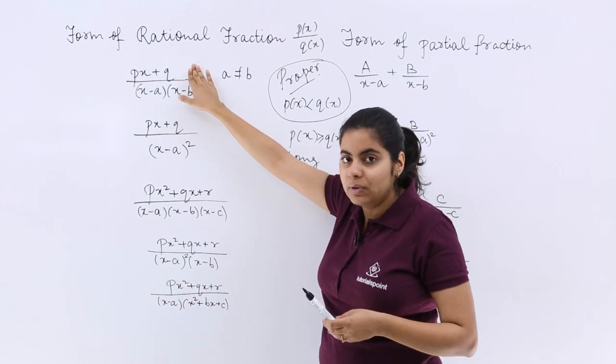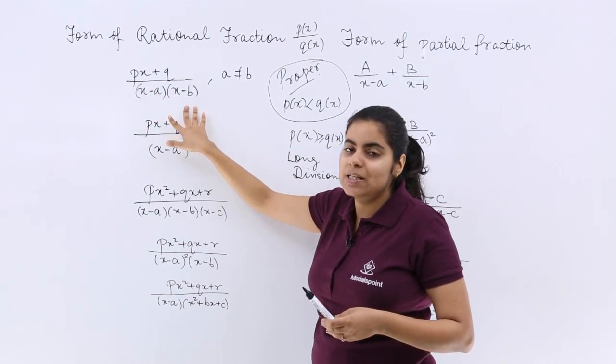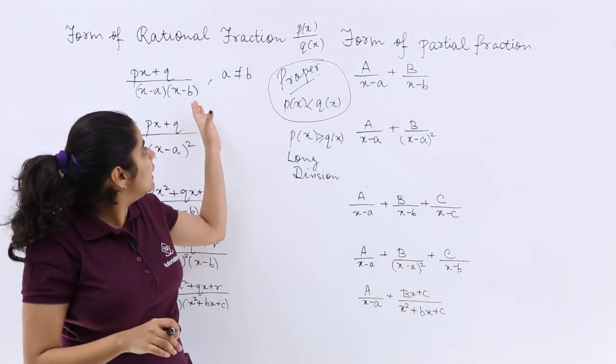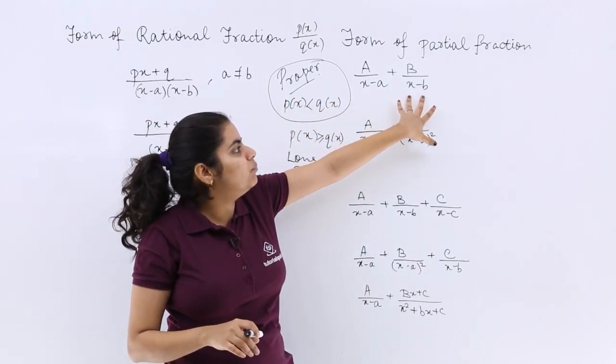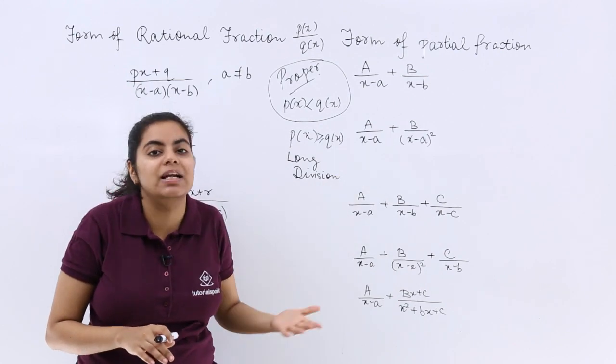If your given form is like (px + q)/[(x - a)(x - b)]—that means there are two factors in which it can be resolved—then it can be mentioned as a/(x - a) + b/(x - b), where a, b are real numbers.